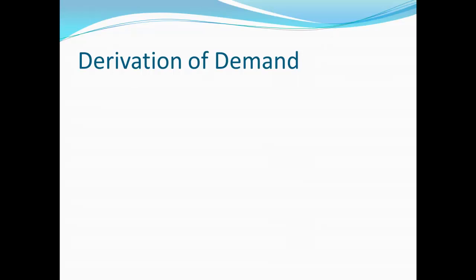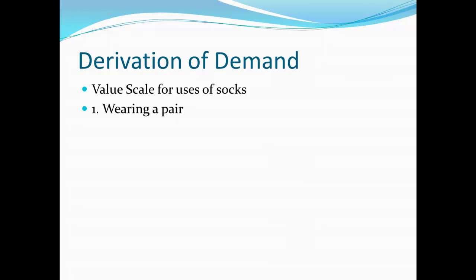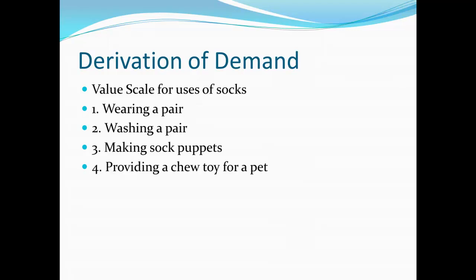Now let's turn toward the derivation of demand and how we can get that from all the stuff that came before. First, let's build a value scale for something like the uses of socks. Here we're just going to come up with five. First, if I have a pair of socks, sensibly I might want to wear one pair. Second, maybe wash a pair of socks. Third, maybe I could make sock puppets — that's always fun. Fourth, I could provide a chew toy for a pet, take up those socks, tie them together, and hand them to my dog to chew on. Or finally, using them for dust cloths — that's another possibility I could do with a pair of socks.